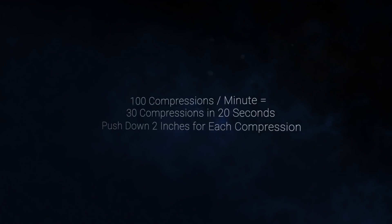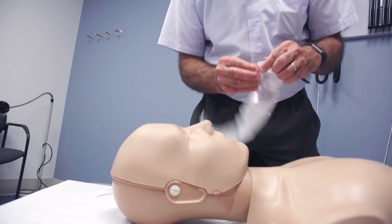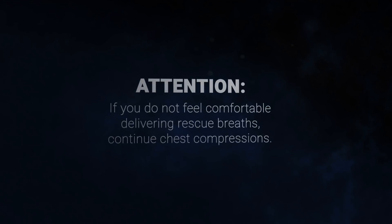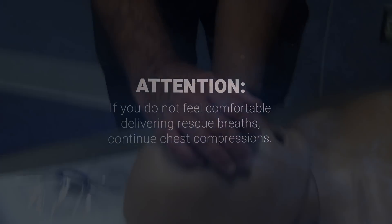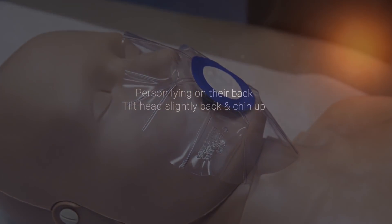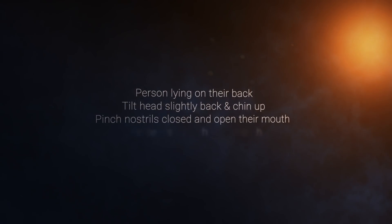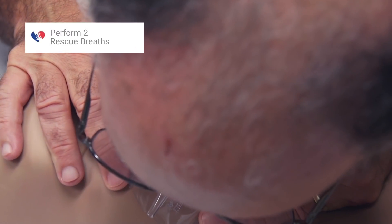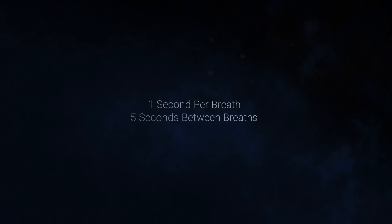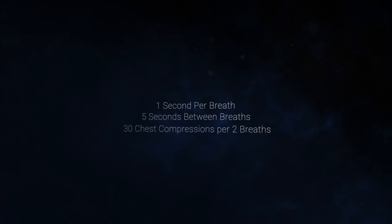After 30 compressions, you may begin rescue breathing if you feel comfortable — use a pocket mask if one is available. To perform rescue breathing, make sure they are lying on their back, tilt their head slightly back and lift their chin up to open the airway. Pinch their nostrils closed, open their mouth, and put your mouth over their mouth to create a seal. Give one breath and watch their chest for a chest rise, which indicates the airway is open and air is getting in. Give a second breath and then go back to chest compressions. Each breath should be about one second in duration, with about five seconds between breaths. The ratio of compressions to breaths is 30 to 2.